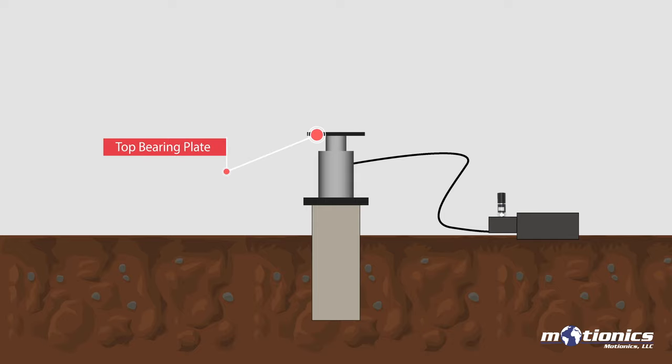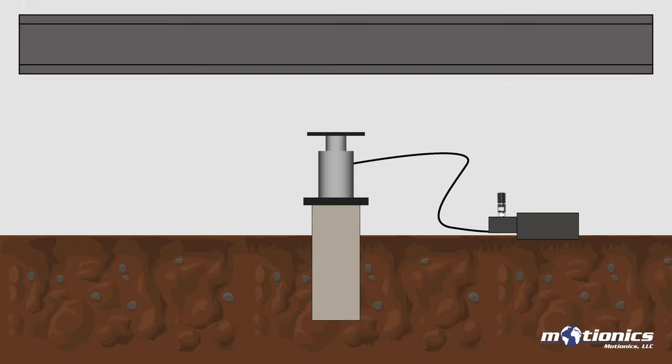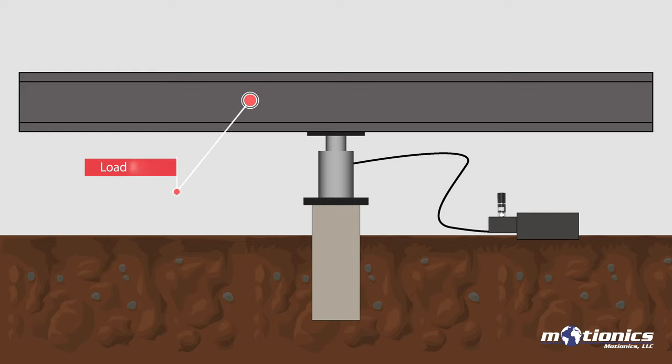Then, the load beam is placed on top of another bearing plate over the hydraulic jack to react against load. The load beam is adjusted to be centered and level to ensure uniform load on the pile.